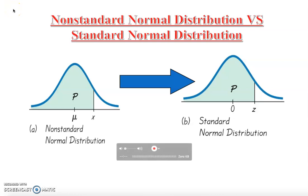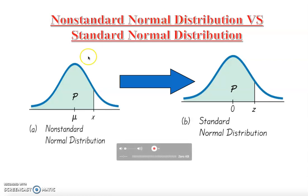In this video I'm going to talk about the difference between non-standard normal distribution versus standard normal distribution. First of all, what is normal distribution? In earlier chapters we learned about normal distribution — in the very first or second chapter of statistics you are introduced to some graphs. This is one of the important graphs in statistics: it's called the normal curve, or bell shape.